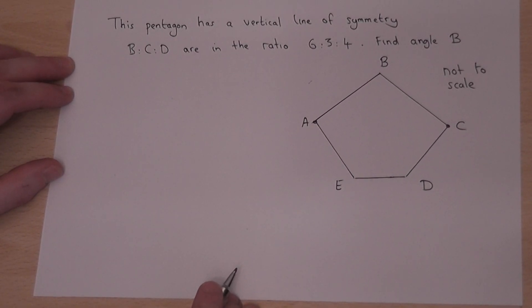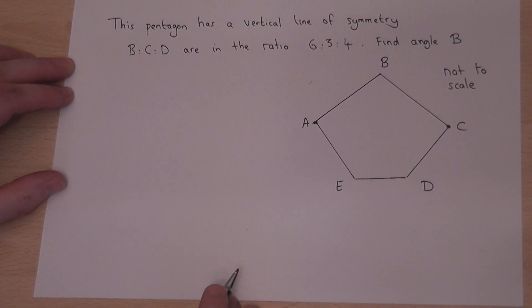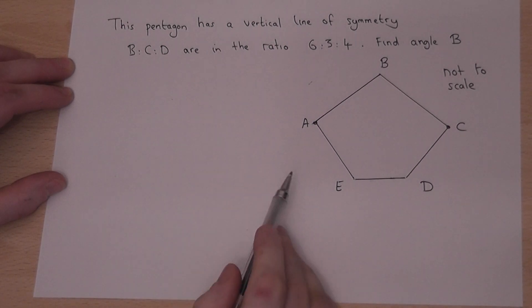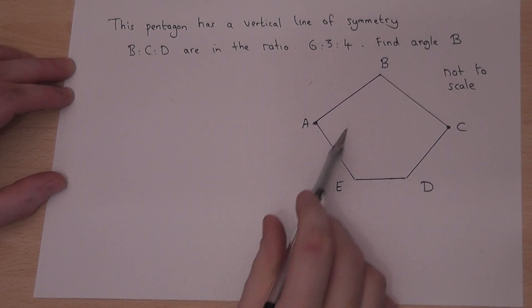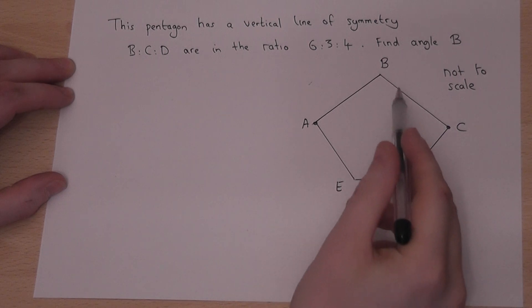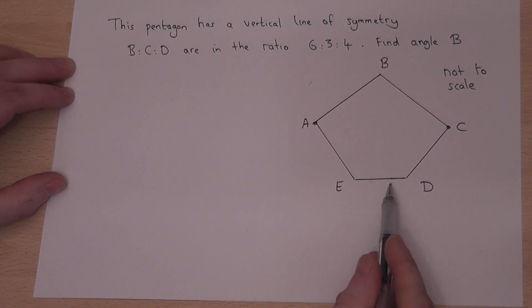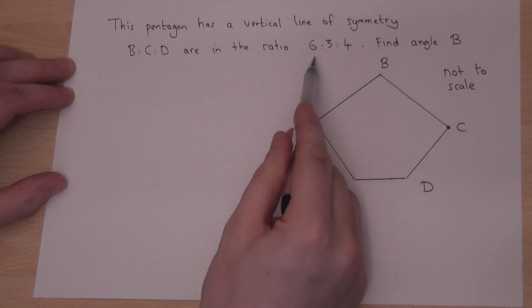This is a fairly typical but slightly trickier example of a geometry question involving algebra. We have a pentagon which has a line of symmetry down the center. The angles B, C, and D are in the ratio 6 to 3 to 4.